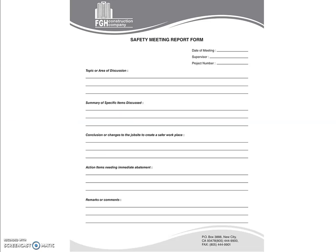This is the safety meeting report form. Previously it was the attendance form, but in the report form you will have headings such as the topic or area for discussion, summary of specific items discussed, conclusion or changes to the job site to create a safe workplace, action items, meeting immediate abatement, and remarks or configuration. This is the safety meeting report form.